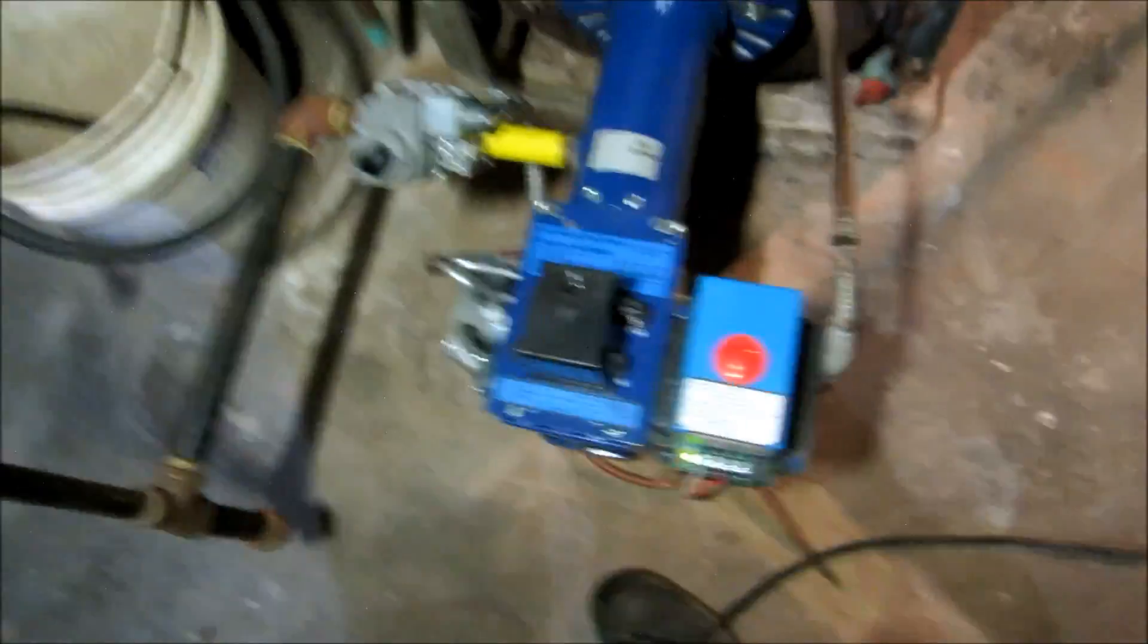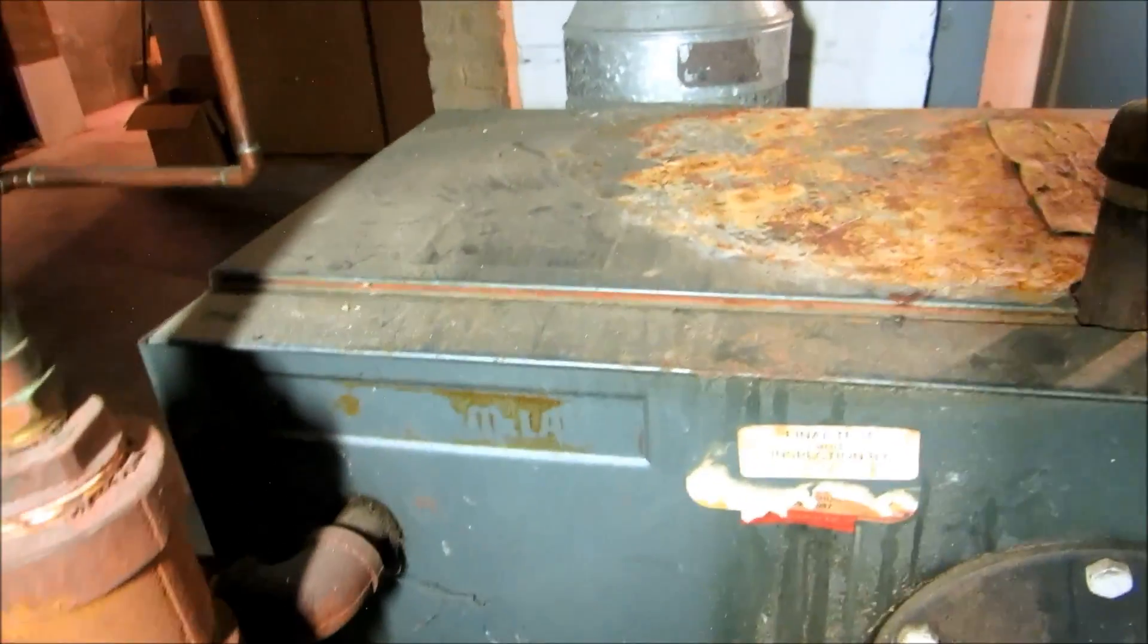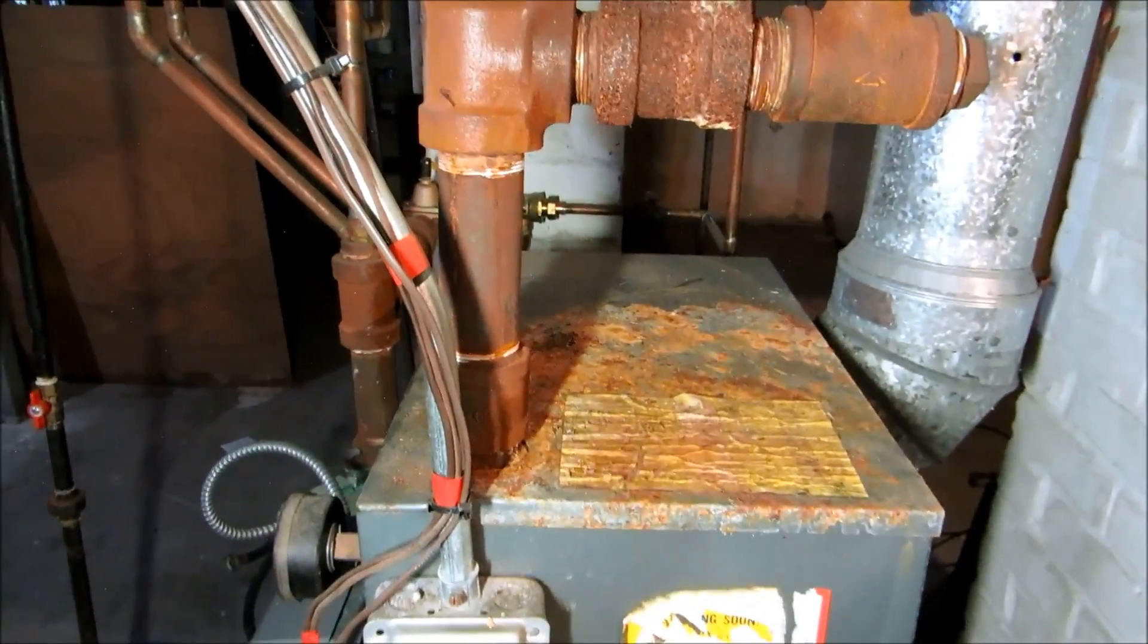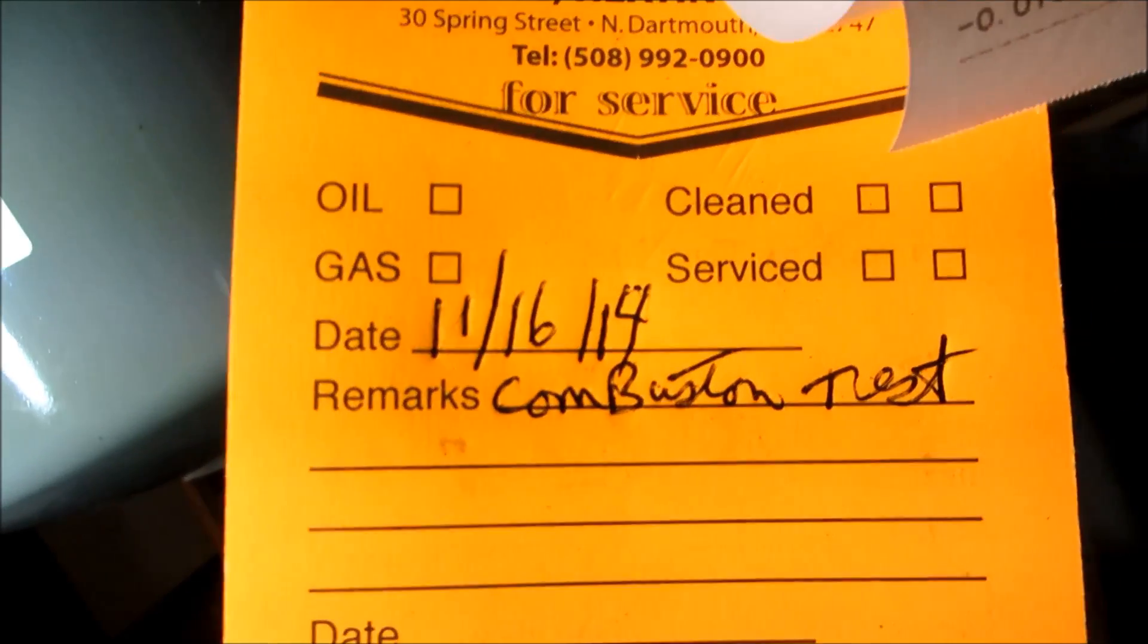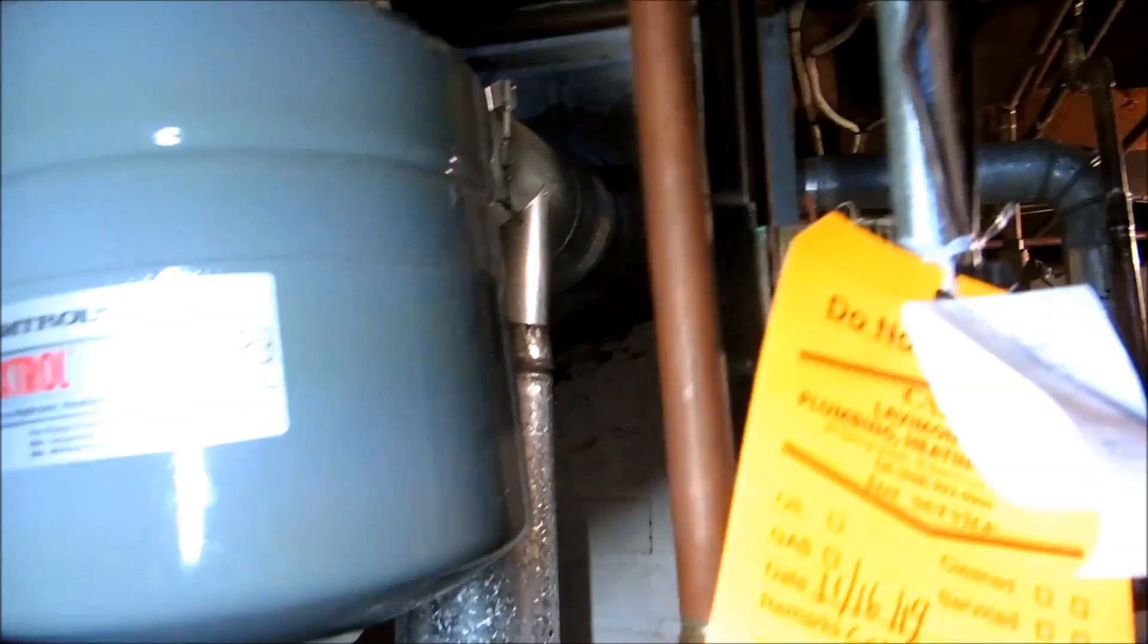An old Weil-McLain two-section boiler. Conversion burner on the Weil-McLain. Just wanted to make sure it was safe to run. He could run it. He needs to get a price. Three-quarter. Look at the four zones.